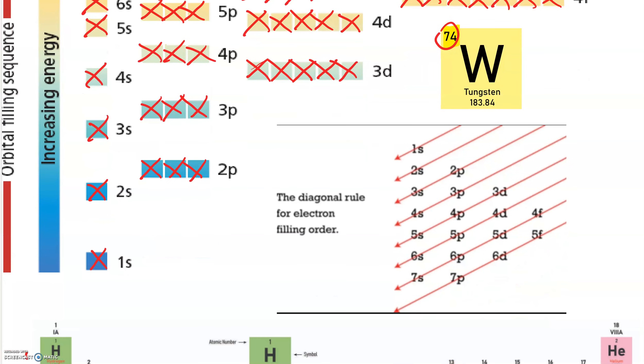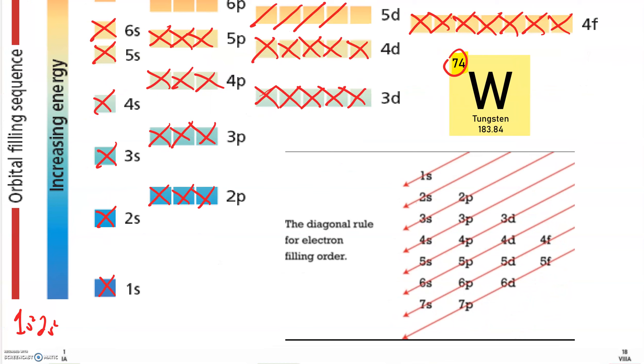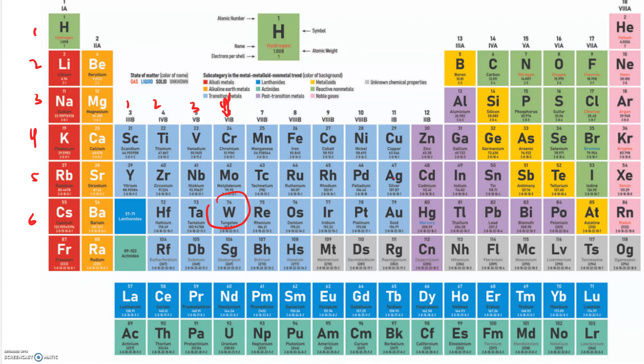So our electron configuration, if we write it out in long form, is going to be, and take a deep breath because this is going to be a long one, 1s2, 2s2, 2p6, 3s2, 3p6, 4s2, 3d10, 4p6, 5s2, 4d10, 5p6, 6s2, 4f14, 5d4. It looks like that prediction held out pretty well, 5d4.